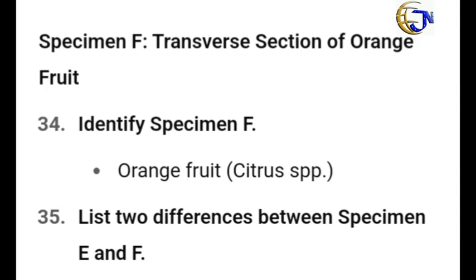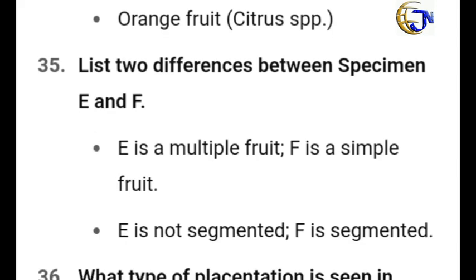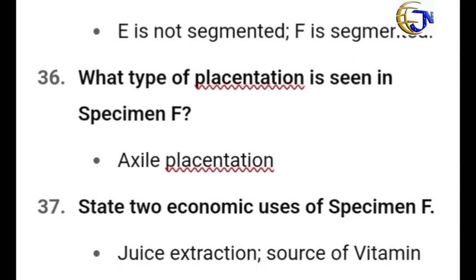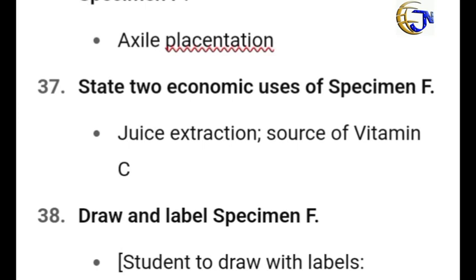The next specimen is a transverse section of orange fruit — Specimen F. Identify it. List two differences between Specimen E and F: pineapple fruit is a longitudinal section while orange is a transverse section; E is a multiple fruit while F is a simple fruit; pineapple is not segmented while orange is segmented. What type of placentation is seen in Specimen F? It is axile placentation. State two economic uses of Specimen F: juice extraction and as a source of vitamin C.